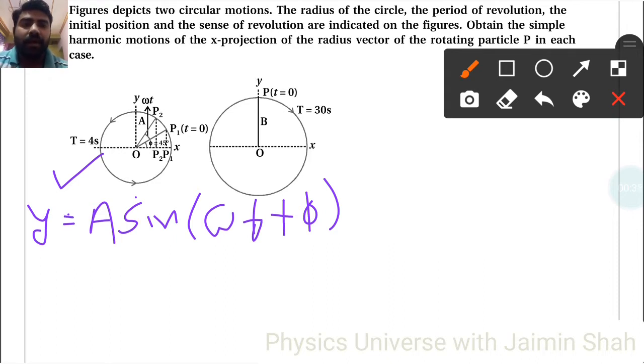Now with the help of this, see here we can also write cos. Why we write here cos? When our displacement starts from the maximum, we have to write cos. So cos omega T plus φ.